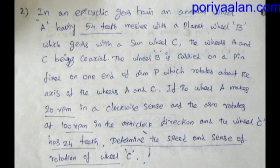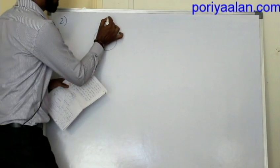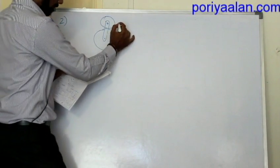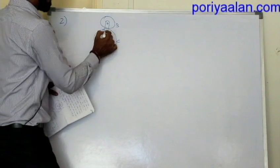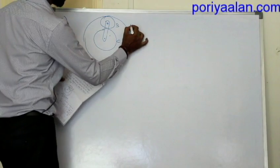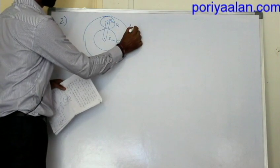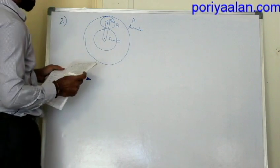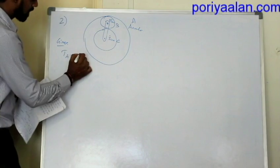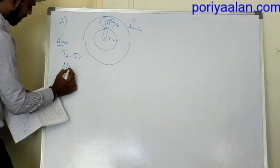We need to determine the speed and sense of rotation of wheel C. The system has a sun gear, a planet gear, and an annular gear A. Given data: Ta = 54 teeth for the annular gear. Speed of annular gear NA = 20 rpm.